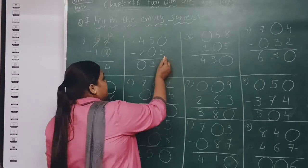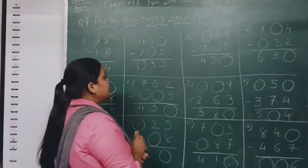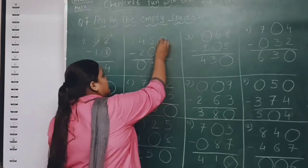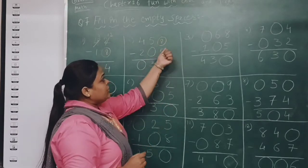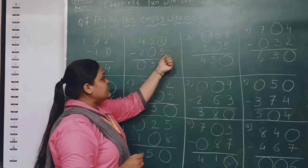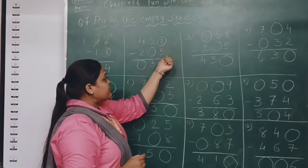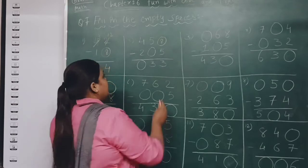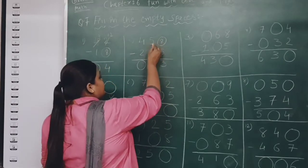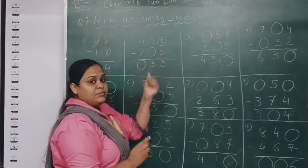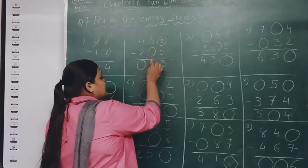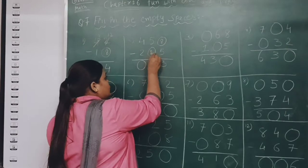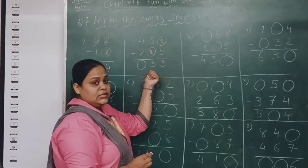Next: we have to find a number where 5 and 3 are given. 5 plus 3 is 8, so we put 8 and check: 8 minus 5 is 3 — correct. Now here 3 is the answer, so which number minus something gives 3? 5 minus 2 gives 3, so the answer is 2.